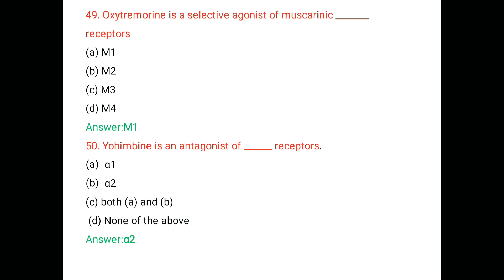Oxotremorine is a selective muscarinic acetylcholine receptor agonist. They are used as a research tool in experimental studies to determine the effect of anti-Parkinsonian drugs.